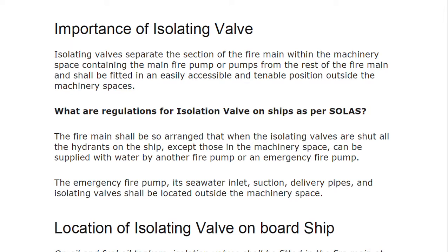The fire pump is generally located in the machinery space — the GS pump is generally located in the bottom platform of the engine room. The surveyor will ask you the location. The isolating valve shall be fitted in an easily accessible and tenable position outside the machinery space — it must be outside the machinery space.